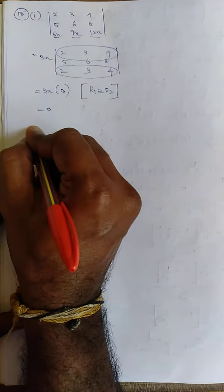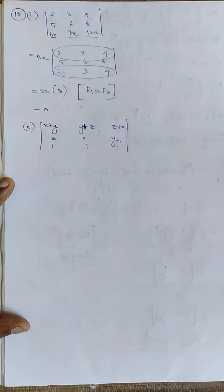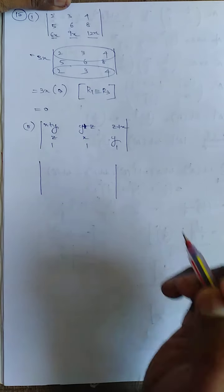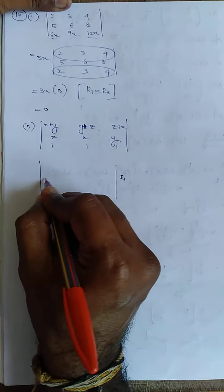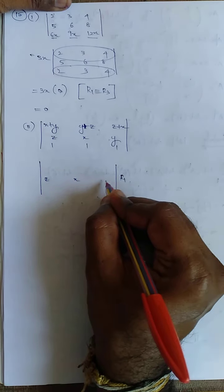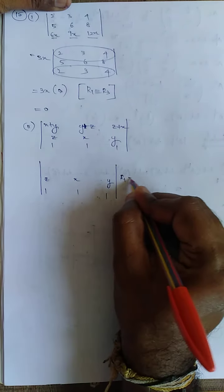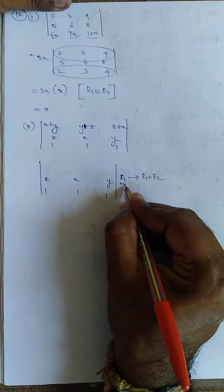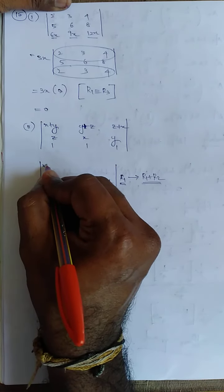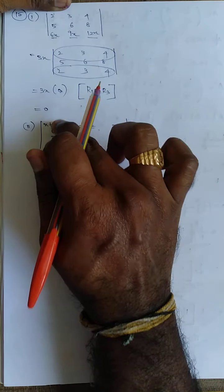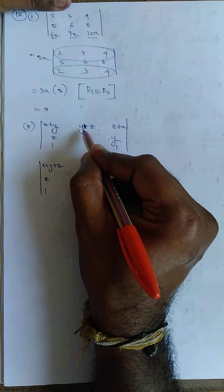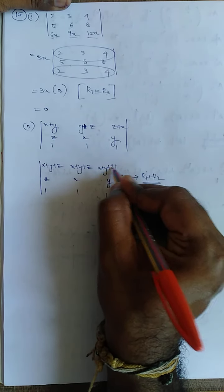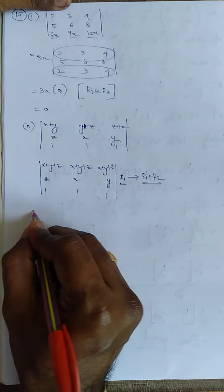Next, the second sub-question — without expanding, I need to find the answer. I am going to change only R1; there is no change in R2 and R3. So put z, x, y and 1, 1, 1. The change is R1 tends to R1 plus R2. R1 plus R2 gives x plus y plus z in each entry of the first row.